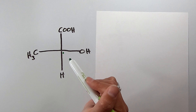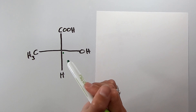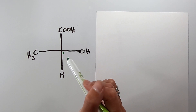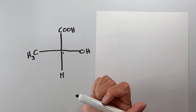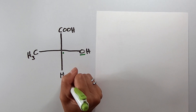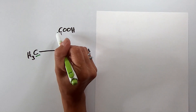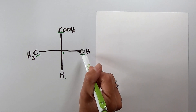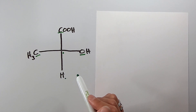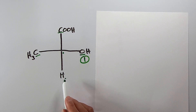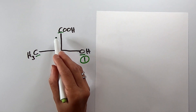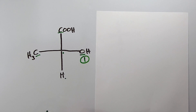Now we have to determine priority — one, two, three, or four — with one being the highest priority. We start at the chiral carbon and go to the first atom attached in each direction. Going each way, we encounter an oxygen, a hydrogen, a carbon, and another carbon. Oxygen has the highest atomic number, so it gets priority one. Hydrogen has the lowest atomic number, so it will probably be priority four. Now I have to decide between the two remaining substituents for priority two and three.